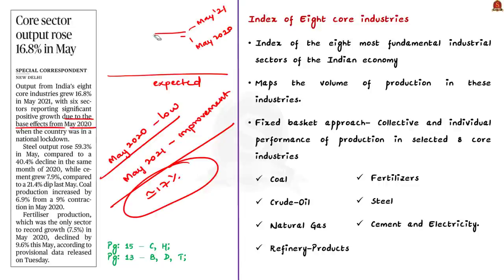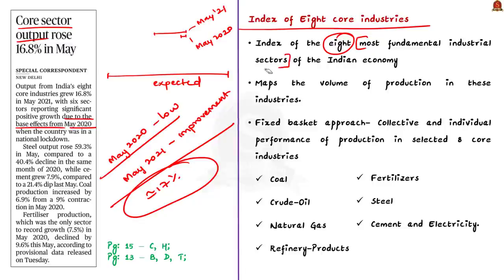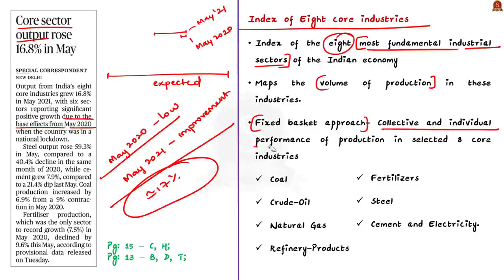The growth has been measured through core sector output, so let us discuss the index of eight core industries. As the title suggests, this is an index of the eight most fundamental industrial sectors of the Indian economy, and it maps the volume of production in these industries — how many units are produced. The ICI adopts a fixed-basket approach, measuring collective as well as individual performance of production in the selected eight core industries that contribute most to our economy.